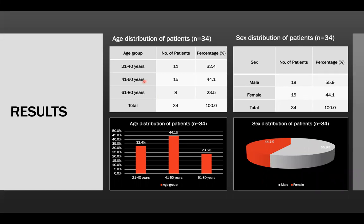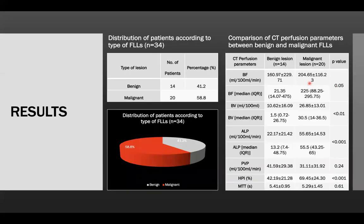Results. The maximum number of patients were in the age group of 41 to 60 years in the study, and there is a male preponderance of 55.9% in comparison to females. A total of 14 patients were diagnosed with benign focal liver lesion whereas a total of 20 patients were diagnosed with malignant focal liver lesion in the study.